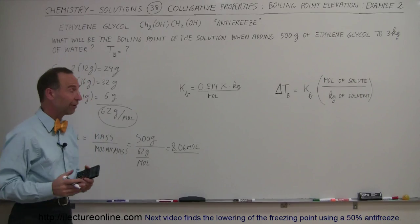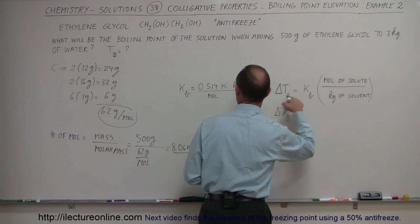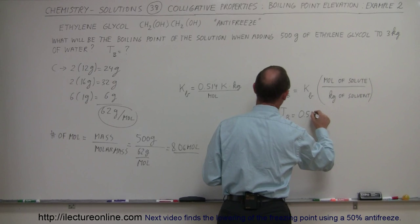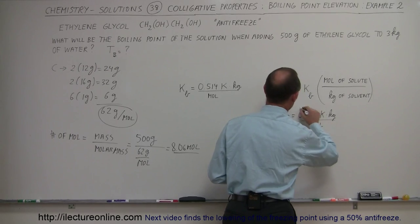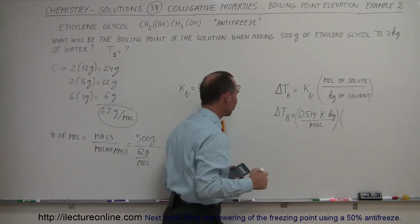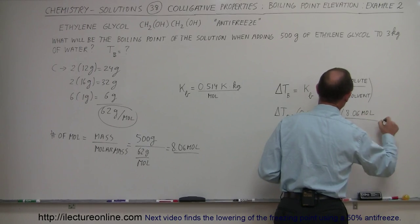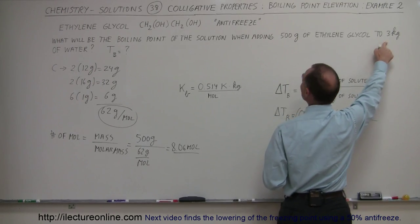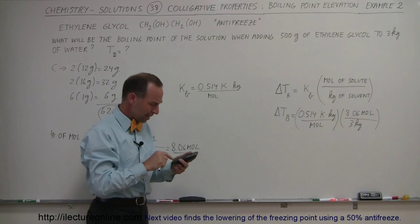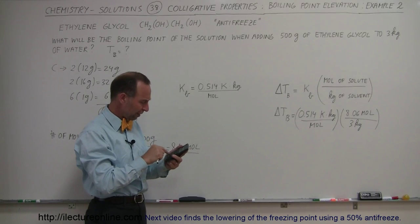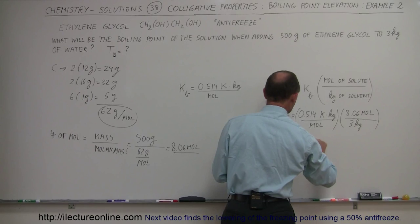Now we're ready to find the elevated boiling point temperature. So the change in the temperature is equal to the constant, 0.514 Kelvin times kilogram per mole. We multiply that times the ratio of the number of moles of solute, which we now determine to be 8.06 moles, divided by the number of kilograms of solvent. We're adding it to 3 kilograms of water, so divided by 3 times 0.514, the increase in the temperature will be 1.38 Kelvin.